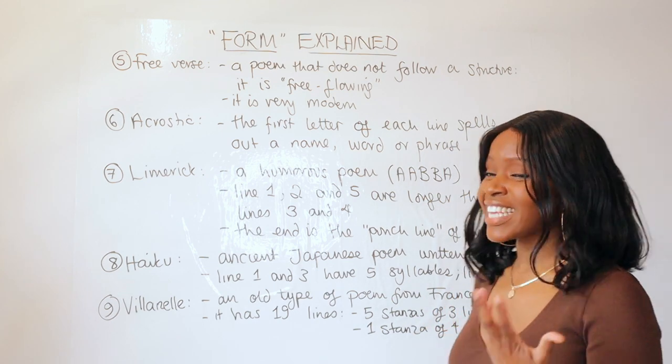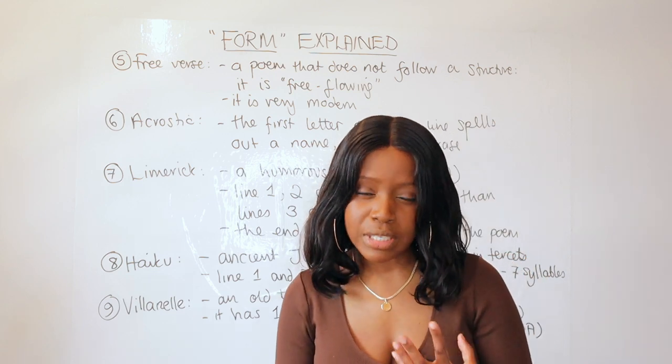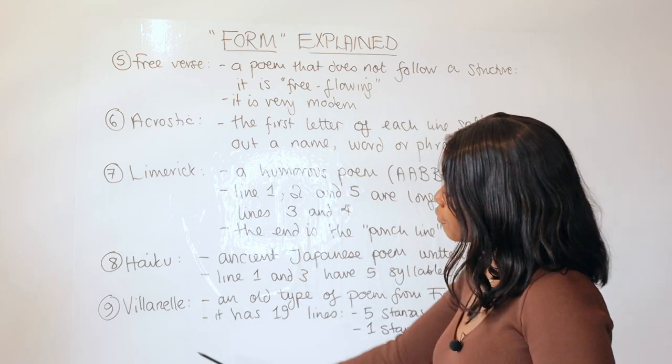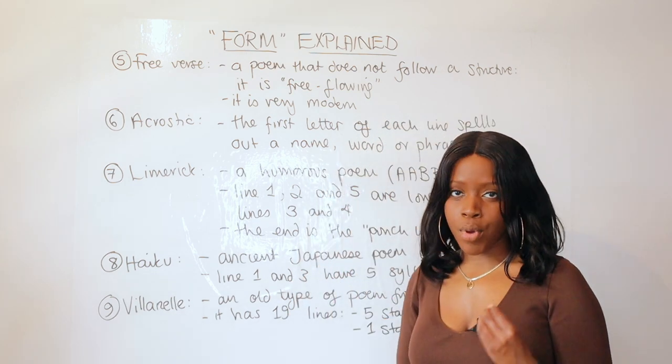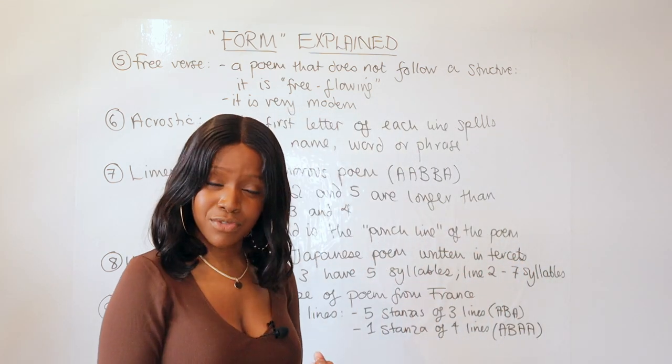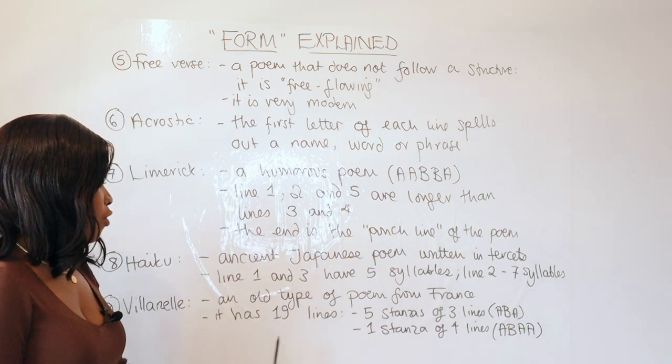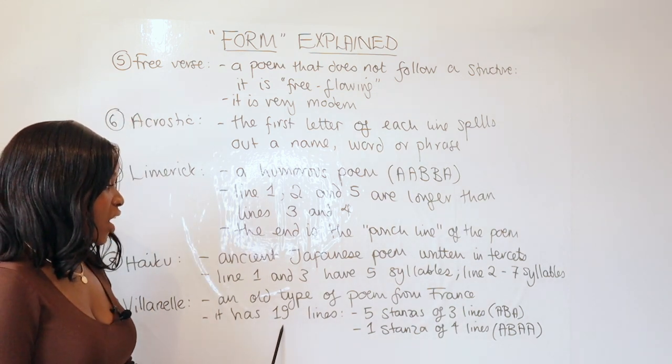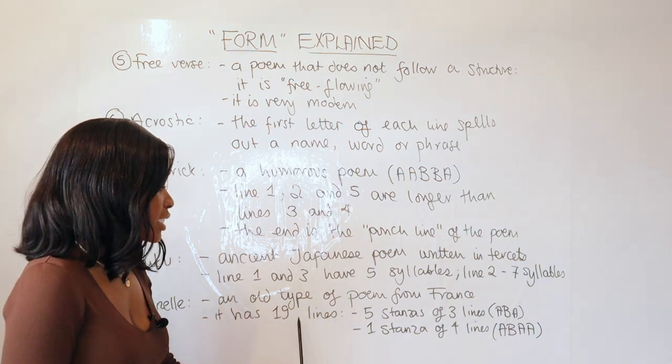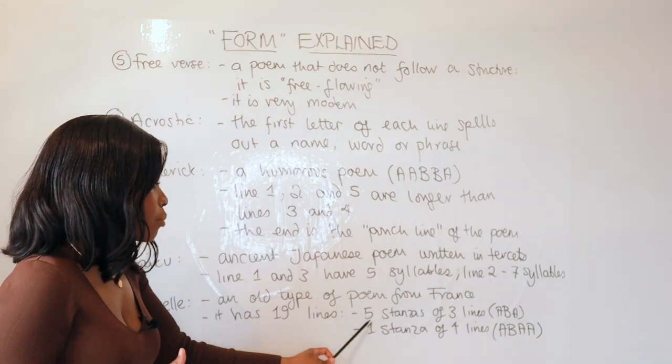Moreover, the other form to be aware of, and this takes us to the end of the list—these are the fairly common forms that you should be aware of—is the villanelle style of poetry. The villanelle style of poetry actually originates from France. This is an old type of poem from France, and it has 19 lines in total, and these lines are split up into different types of stanzas.